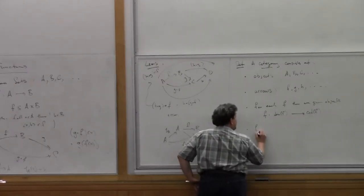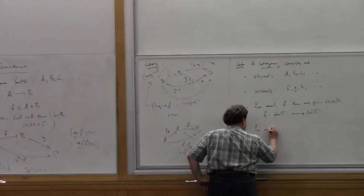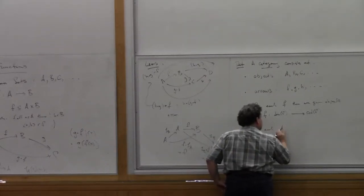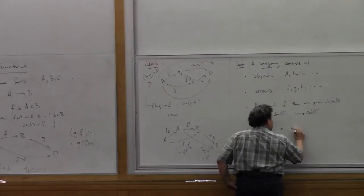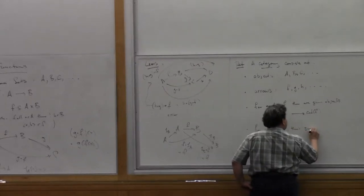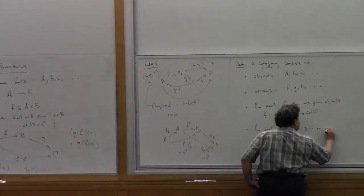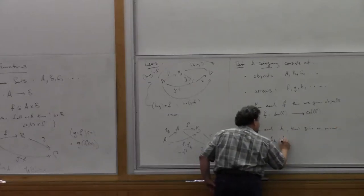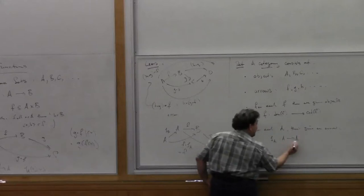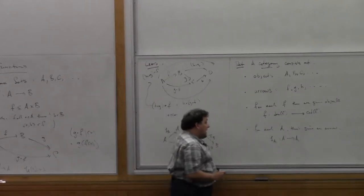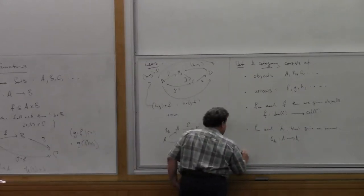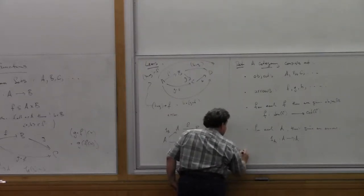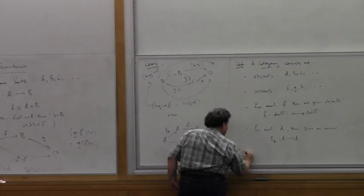The domain of F is on the left of the arrow, the codomain is on the right, and we write F goes from domain to codomain. For each object A, there's an assigned identity arrow 1_A going from A to A. There's also the composition operation: for each composable pair of arrows where the codomain of one is the domain of the next, we have a composition G after F going from A to C. That's one more bit of data: identity, composition, domain, and codomain.